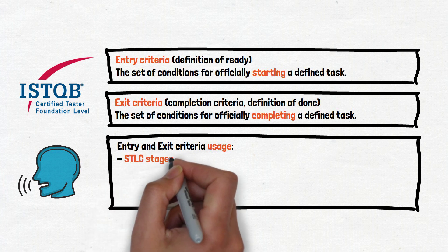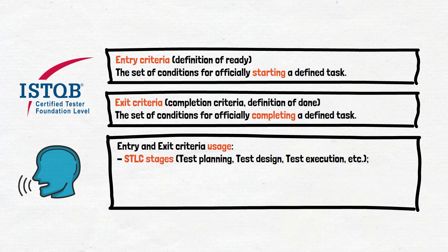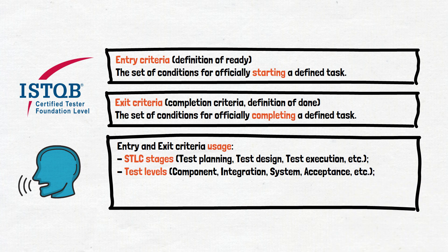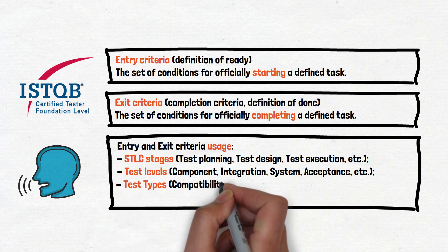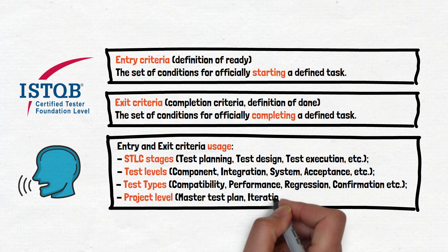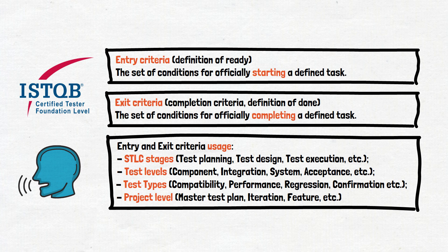The most popular example is the STLC stages, and we are going to talk about it in a couple of minutes. Another popular example is test levels — each level of integration, system, and acceptance testing has its own entry and exit criteria. Almost never mentioned but equally important are the types of testing. Non-functional types of testing have their own entry and exit criteria, and the same applies to regression testing. Last but not least, the project level of entry and exit criteria — they can be at the level of one important or large feature, at the level of an iteration, or even at the level of the entire project.